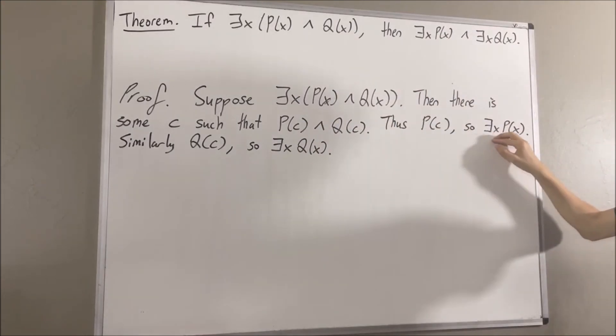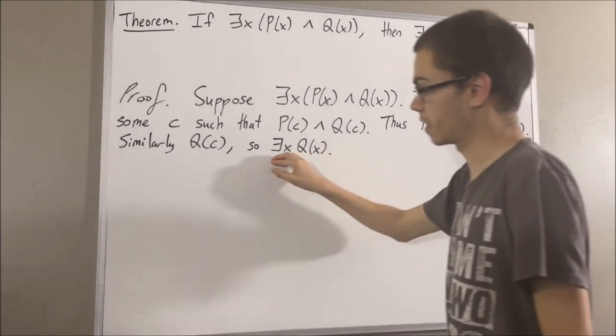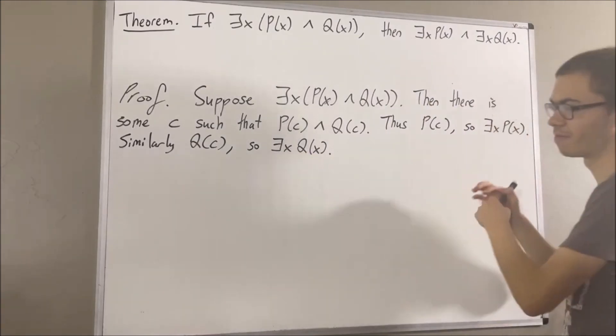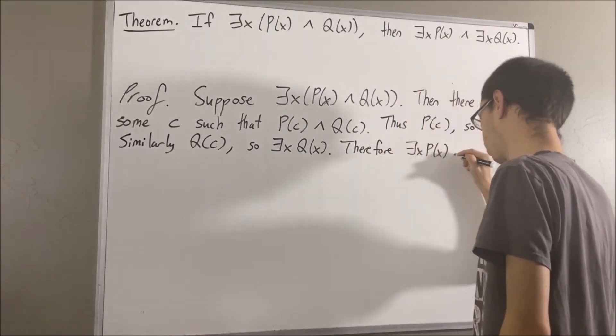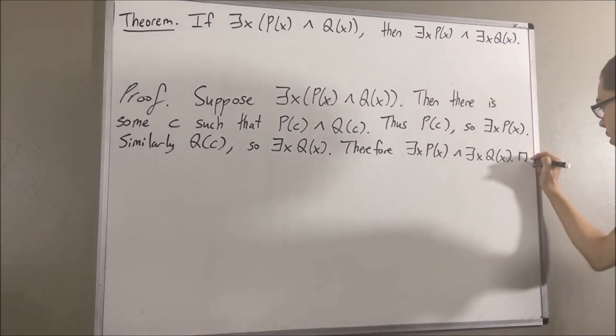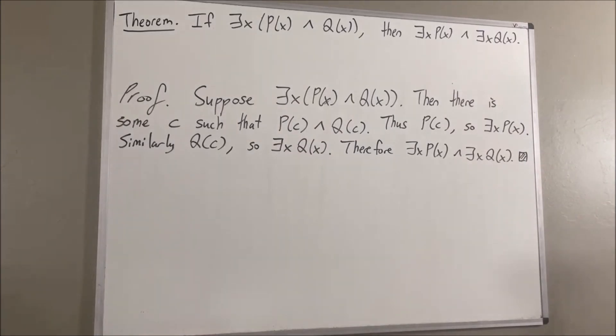And so, since there exists an x such that p of x and there exists an x such that q of x, we can combine these two into a conjunction. And that is exactly what we wanted to prove. So this completes the proof. That's it for this video.